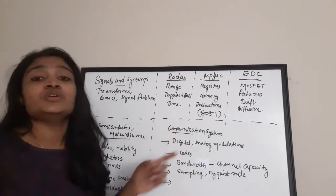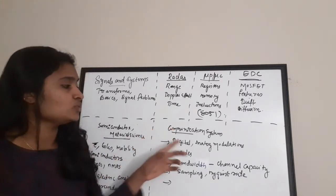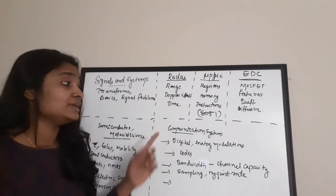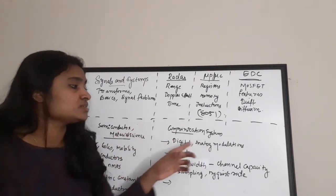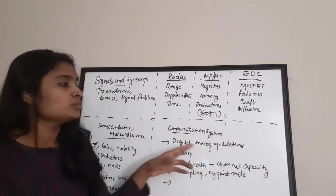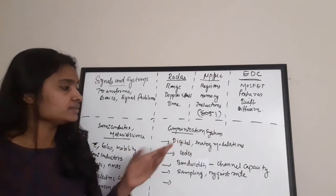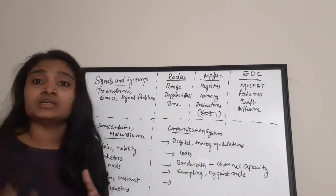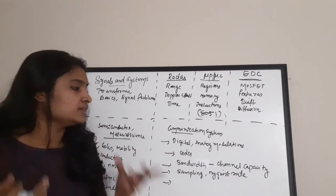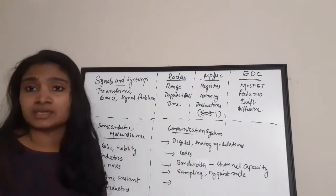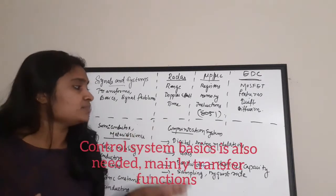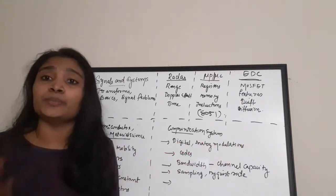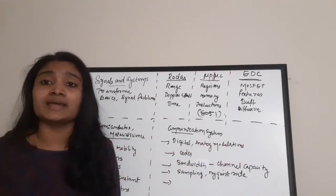For Communication Systems, mainly concentrate on modulation schemes and modulation index for both analog and digital modulations. Also important are code length, bandwidth, channel capacity, sampling rate, and Nyquist rate. These are the main important subjects for ISRO Technical Assistant exam preparation.